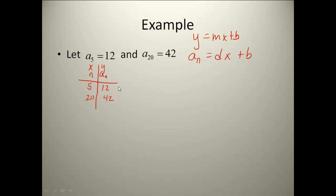Since I don't have the graph of it, I'm going to use my slope formula. I'm going to take my 42 minus 12 over 20 minus 5, subtract those off, and I'm going to get 30 over 15, which is 2. So my common difference, or my slope, is 2.